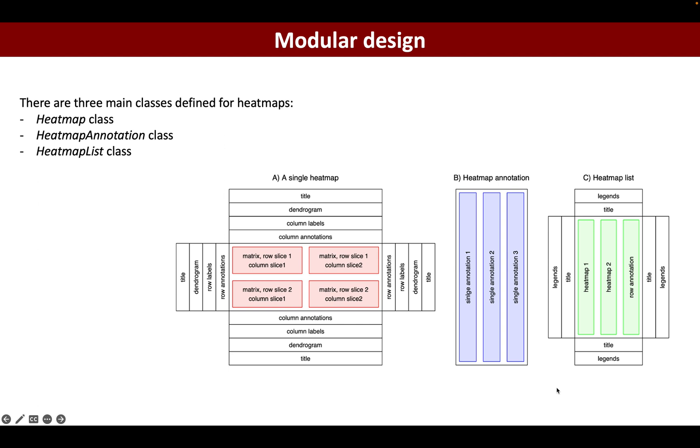Figure A is a demonstration of the structure of the Heatmap class, which contains the heatmap body and various heatmap components including the title, dendrograms, column labels, row names, and annotations. Figure B is a list of various heatmap annotations composed by single annotations. Figure C is a heatmap list which contains a list of heatmaps and annotations, also with heatmap level title and legends.